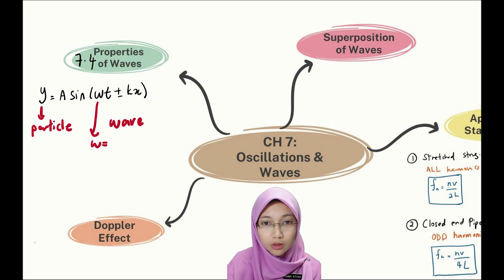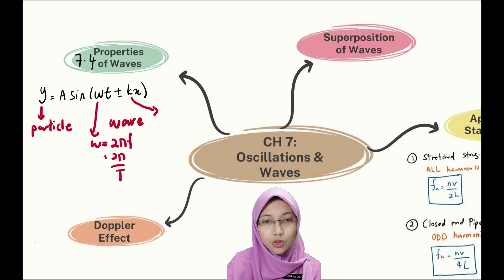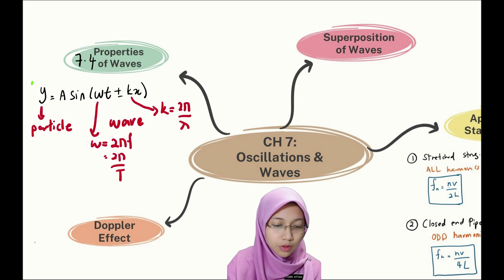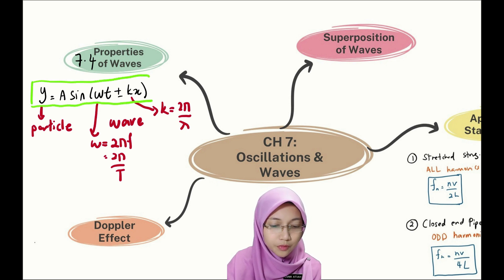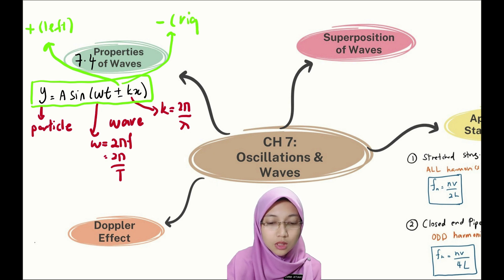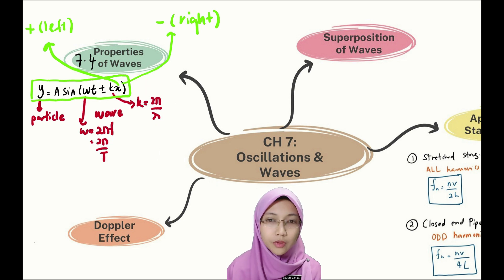We have two important terms: omega (ω) is the angular frequency or angular velocity, equal to 2πf or 2π over the period. We also have k, the wave number, with the equation k = 2π/λ. In the wave equation, the plus-minus sign indicates direction: plus means the wave propagates to the left, and minus means the wave propagates to the right.